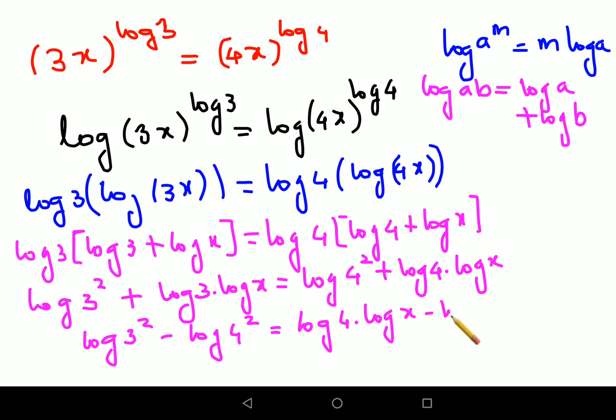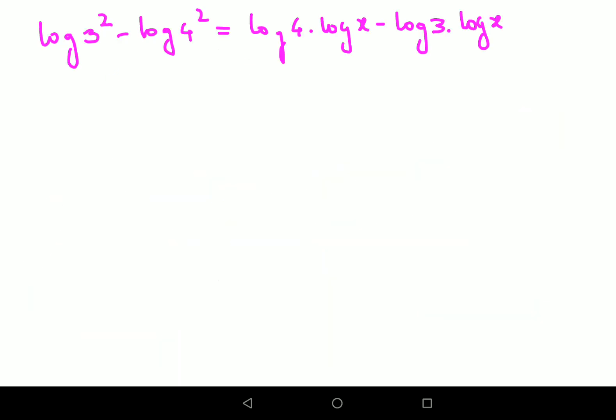After this, we can do a few more things. We know that a squared minus b squared expansion can be used here, which can be written as (log 3 minus log 4) times (log 4 plus log 3).